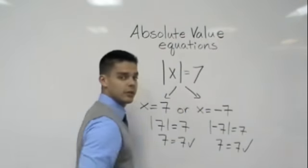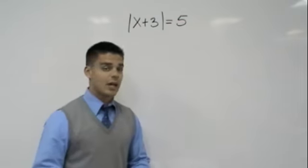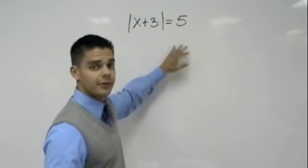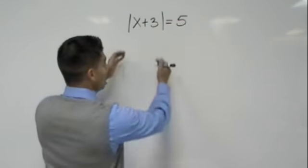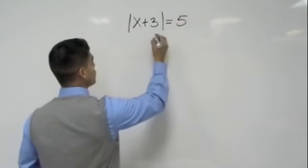But for now, we're working with positives. Remember, draw your two arrows. In this example, we actually have the absolute value of x plus 3 is equal to 5. I want you guys to remember this. Whenever we have the absolute value by itself on one side of the equation, we're ready to make our two arrows.